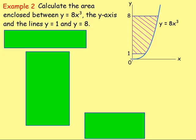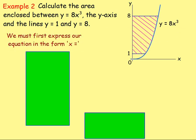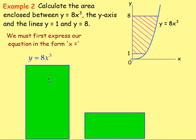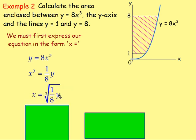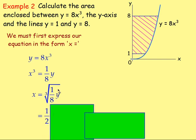Example 2: calculate the area enclosed between y equals 8x cubed, the y-axis, and the lines y equals 1 and y equals 8. First, because we want the area between the curve and the y-axis, we need to express our equation in the form x equals. Starting with y equals 8x cubed, divide both sides by 8, so x cubed equals one eighth of y. Then take the cube root to get x equals the cube root of one eighth of y. Taking the cube root of one eighth: cube root of 1 is 1, cube root of 8 is 2, so we get one half. And cube root of y is y to the power of one third. So x equals one half times y to the power of one third.